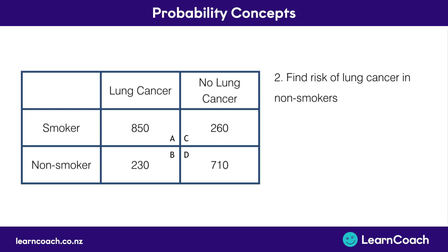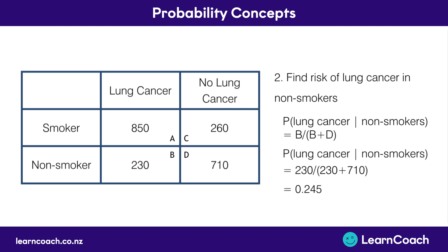For step two, we find the risk of lung cancer in non-smokers using the same formula. We use the probability of lung cancer given they are non-smokers — that's cell B divided by the total number of non-smokers, B plus D. Plugging in our numbers gives us 0.245.